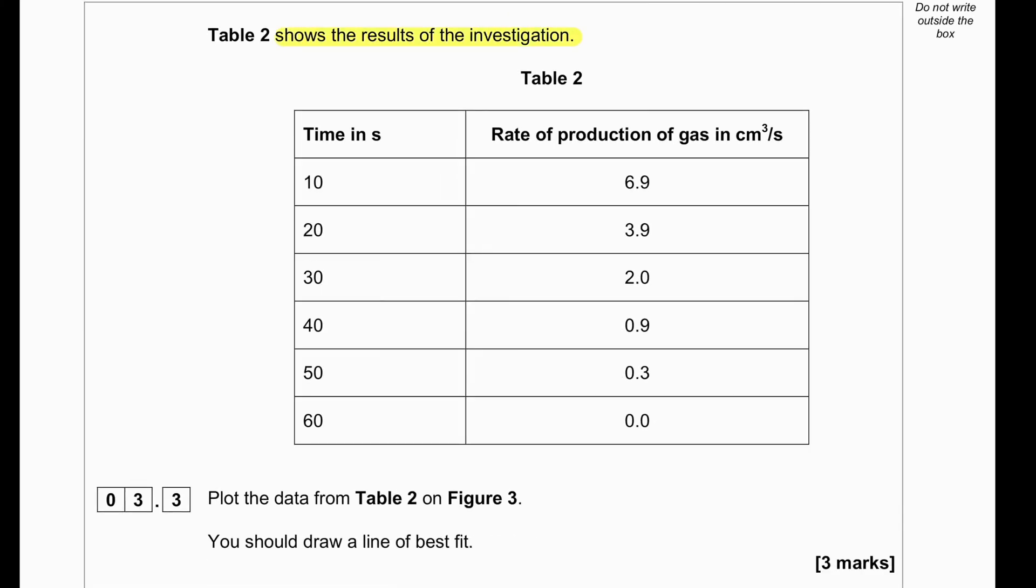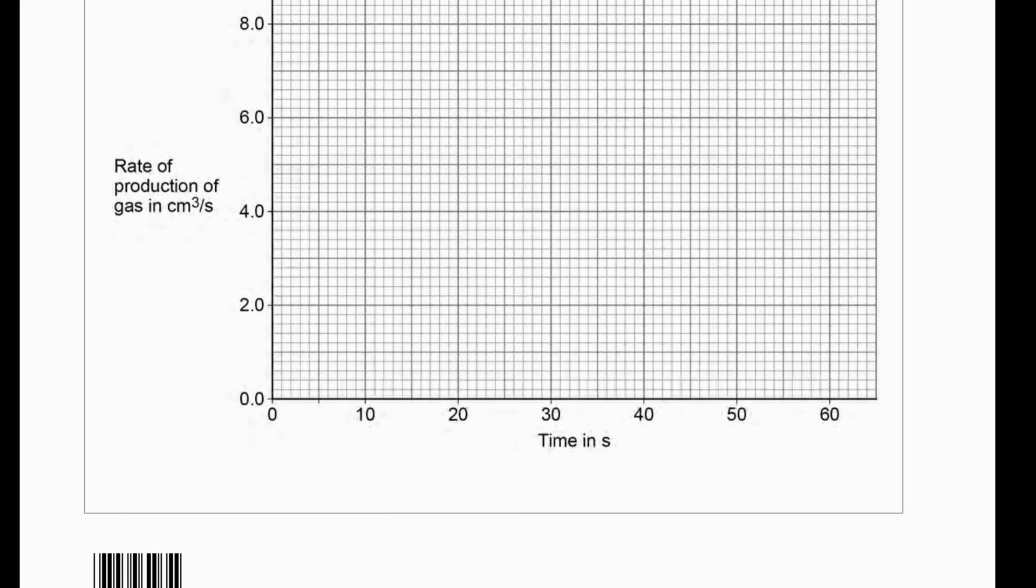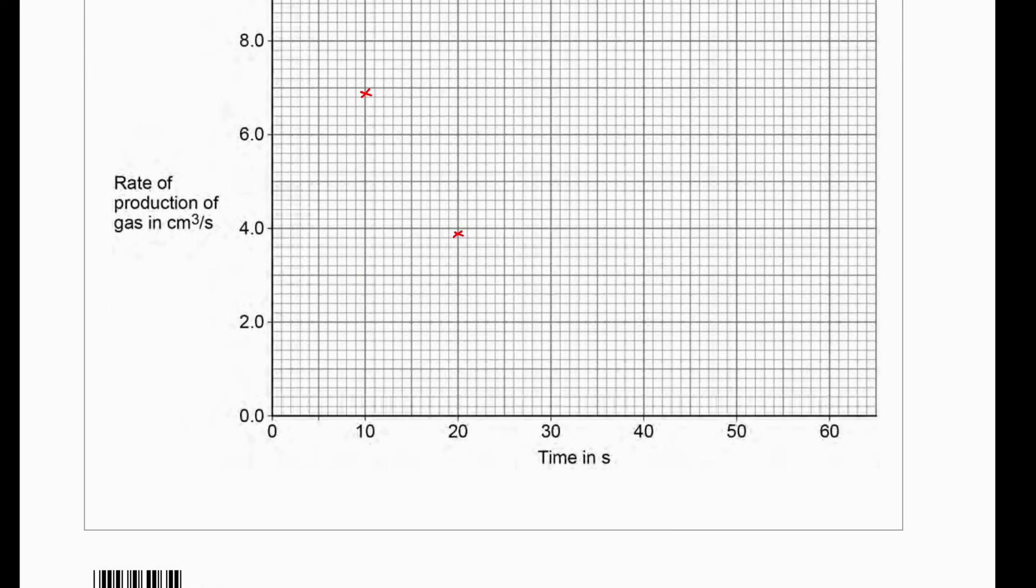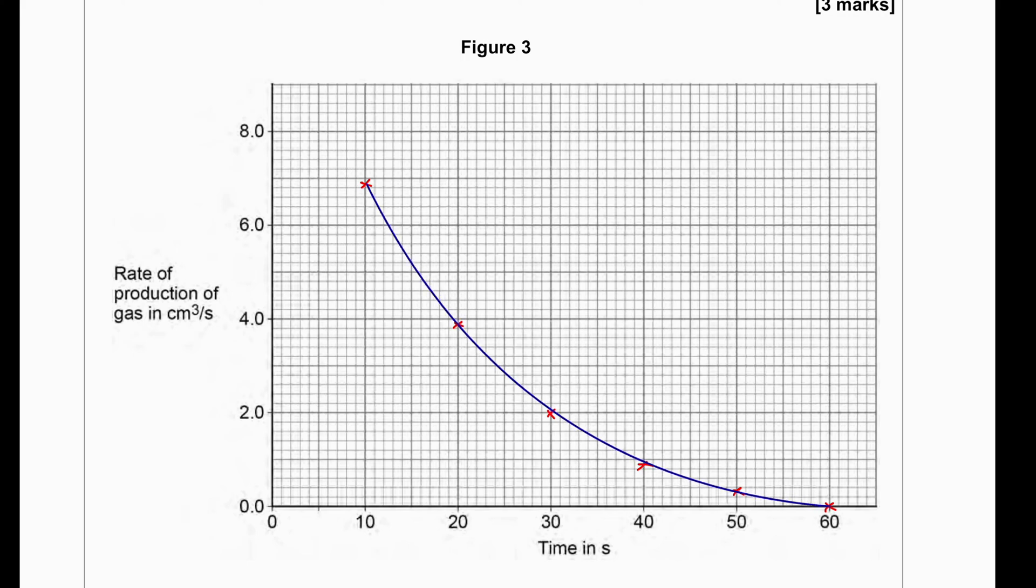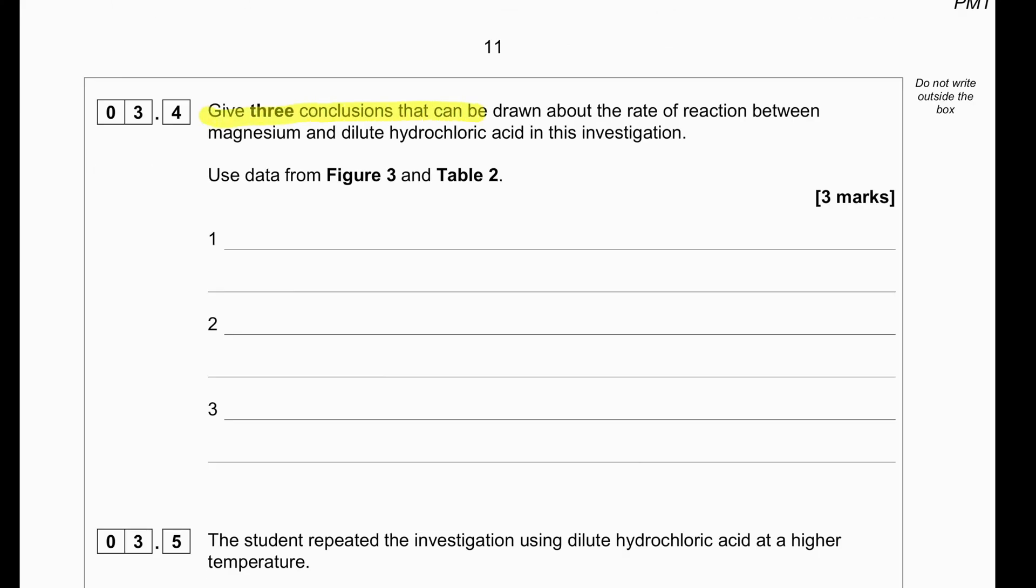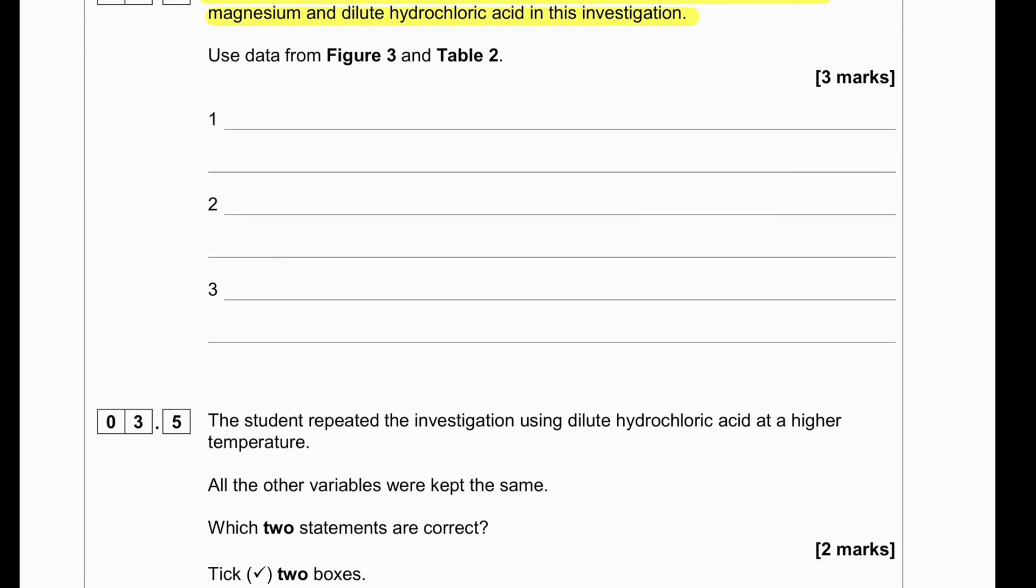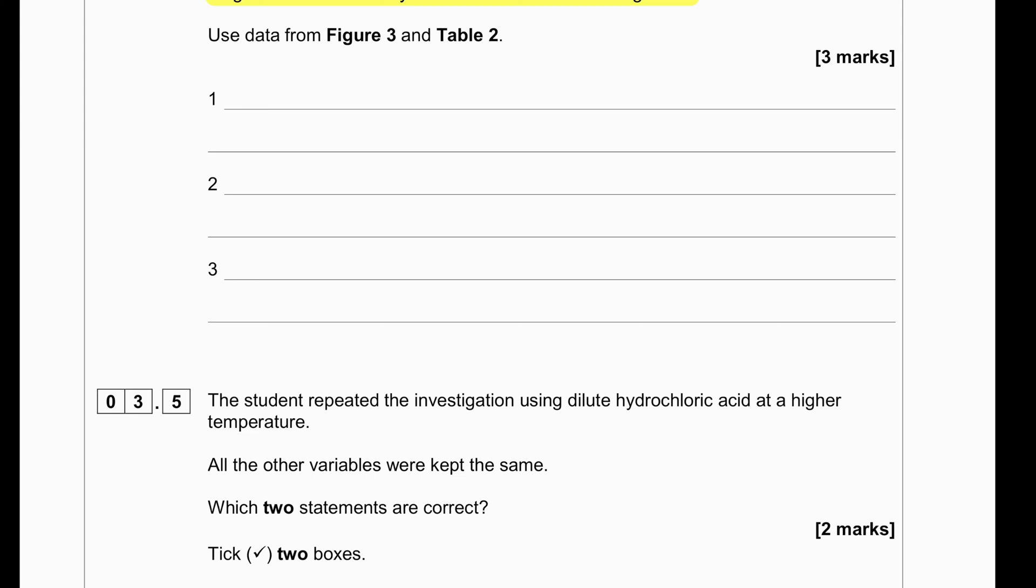Table 2 shows the results of the investigation and we can see rate of production of gas. As the time goes, the rate of production decreases. Plot the data from table 2 on figure 3 and then draw a line of best fit.